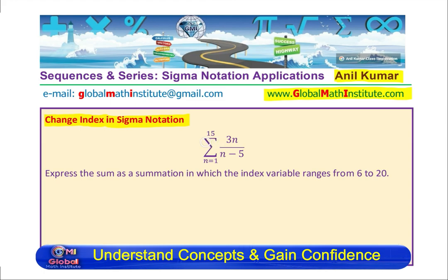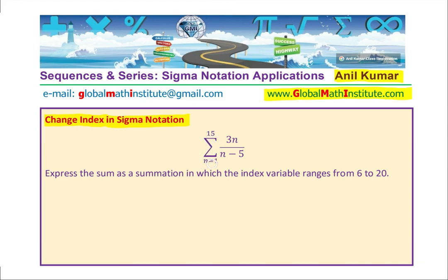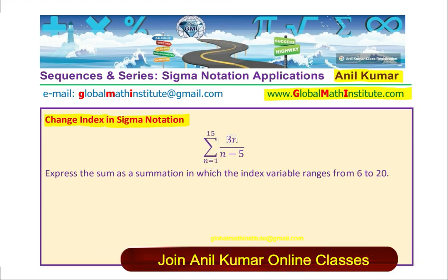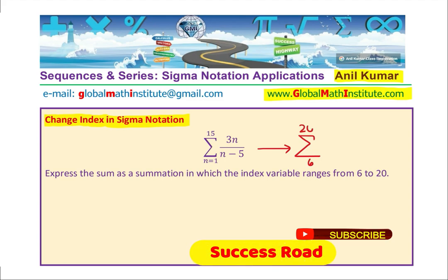We are given the summation as from n equals 1 to 15 for the expression 3n over n minus 5. So, the question here basically is to change this index and make it from 6 to 20. So, we are already given the lower and the upper bound. We need to find the expression.